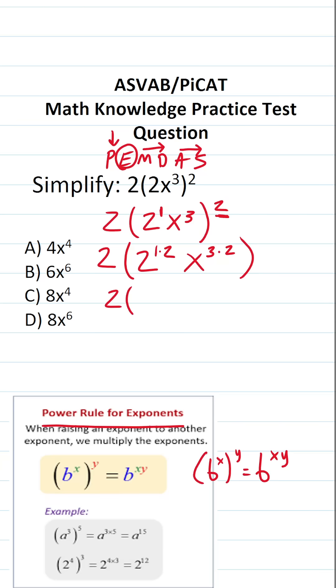This becomes 2 times 1 times 2 is 2. So this is 2 squared x. 3 times 2 is 6. 2 squared is the same thing as 2 times 2, which is 4. So this becomes 2 times 4x to the sixth.